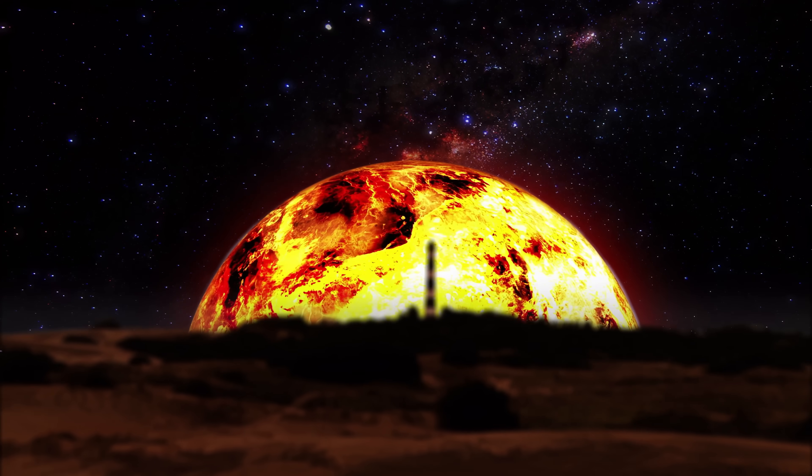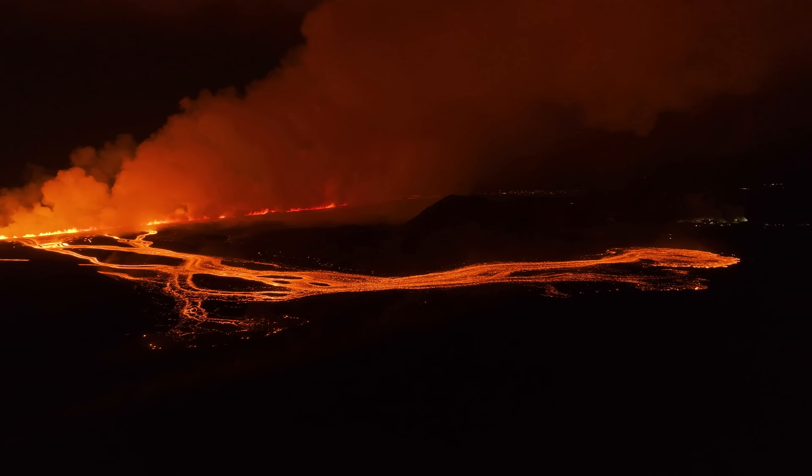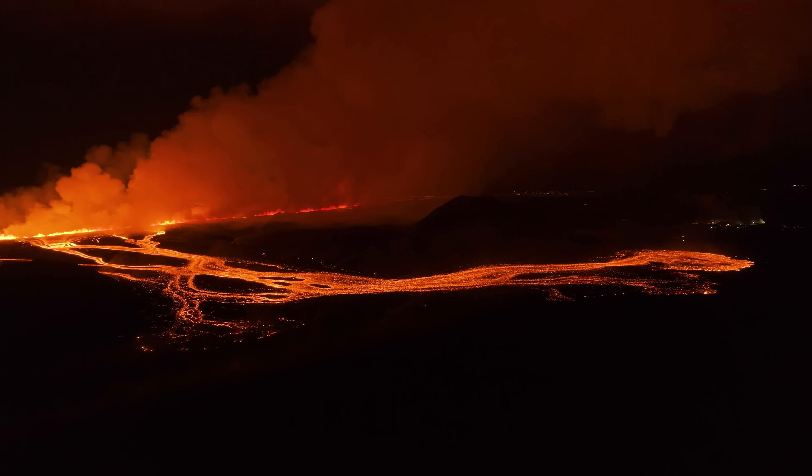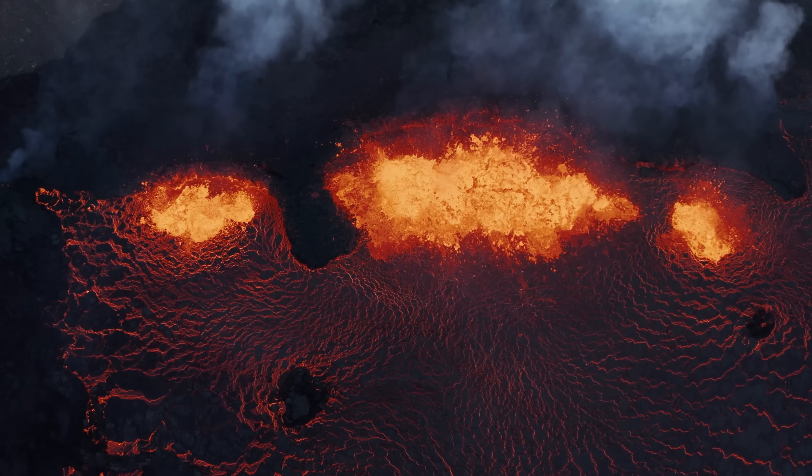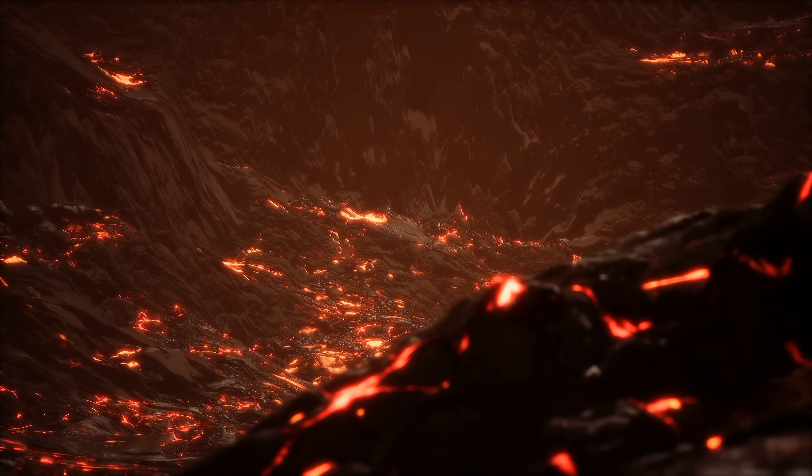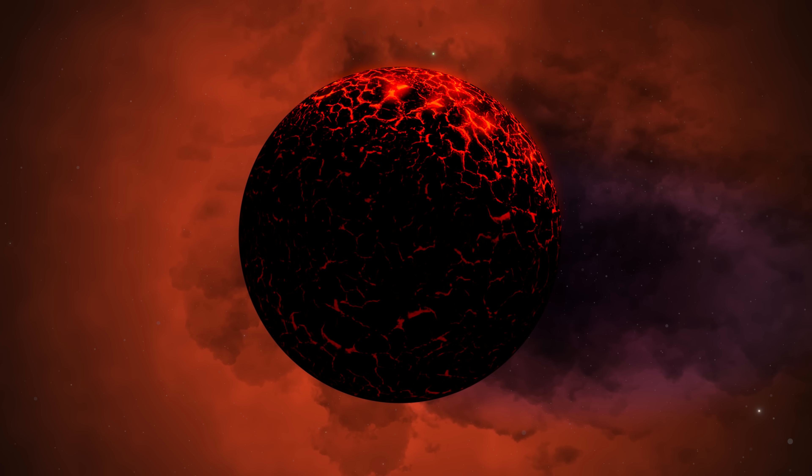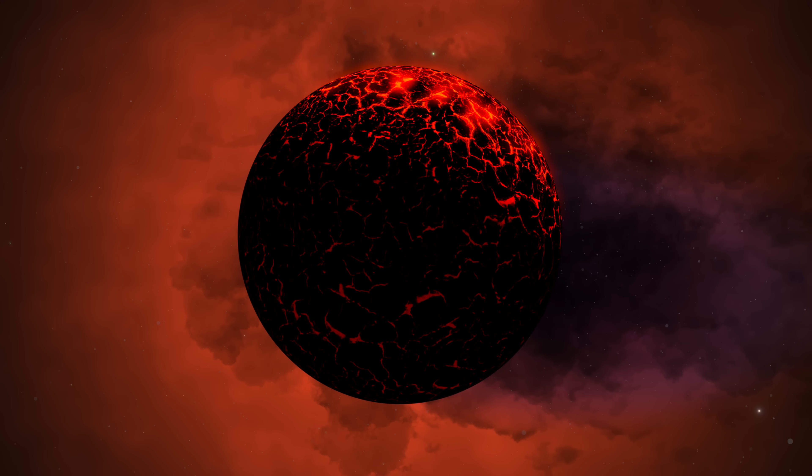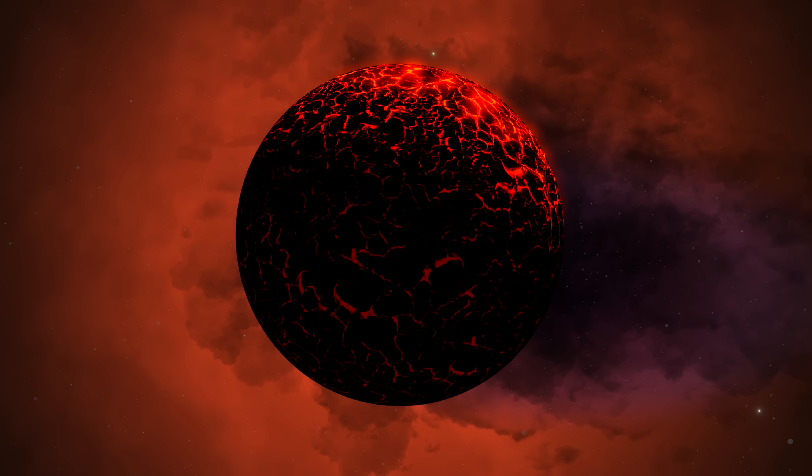An atmosphere of vaporized rock, mostly silicon monoxide. Winds reaching 5,000 kilometers per hour, faster than a bullet. A permanent dayside lava ocean 100 kilometers deep. And most chilling, lava precipitation cycles on the night side. How lava rain works: here's the nightmare fuel. The dayside, always facing its star, heats to 3,000 degrees Celsius, vaporizing rock into gas.